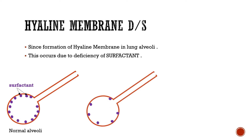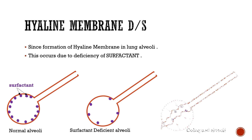Now let's see what happens if surfactant is less in number or deficient. When the neonate expires, the air leaves the alveoli and the alveoli collapses. Hence, air exchange in the alveoli is hampered.